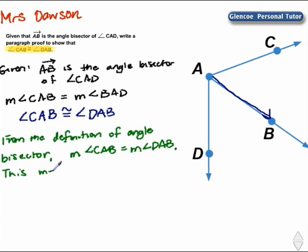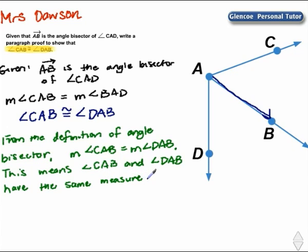This means angle CAB and angle DAB have the same measure. If two angles have the same measure, they are congruent by the definition of congruent.